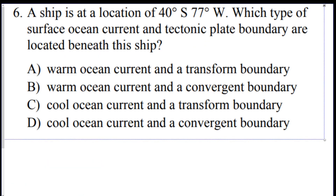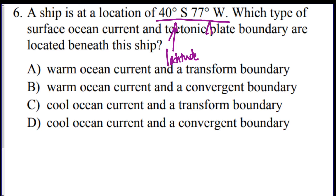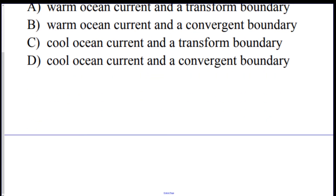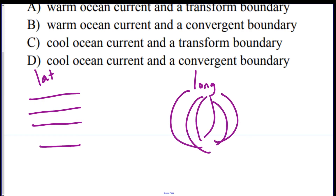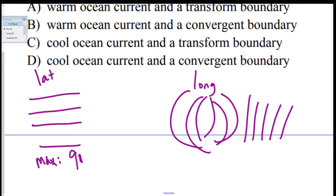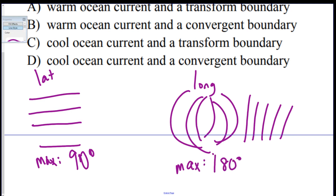Question six: a ship is at 40 degrees south, 77 degrees west. Note that latitude comes first, longitude comes second. Latitude lines are horizontal and max out at 90 degrees. Longitude lines are vertical and max out at 180 degrees.